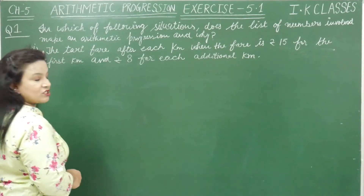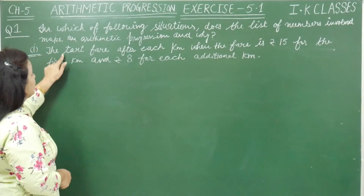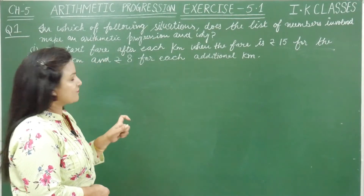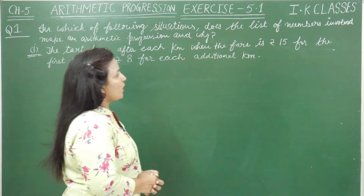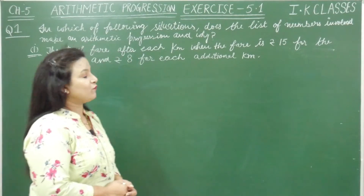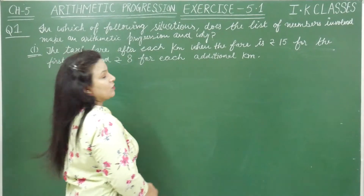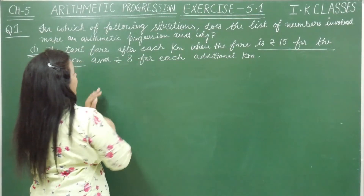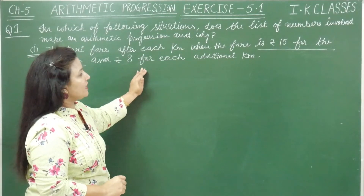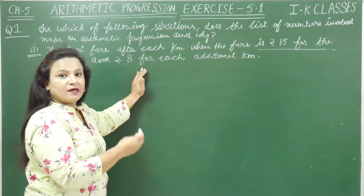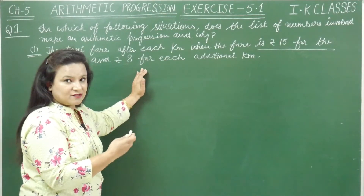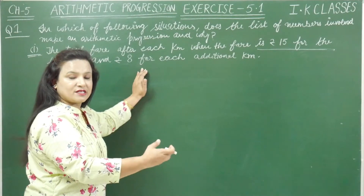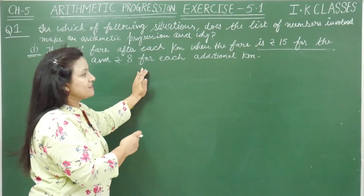The first situation is: the taxi fare after each kilometer when the fare is rupees 15 for the first kilometer and rupees 8 for each additional kilometer. So, first kilometer charges are 15 rupees and after that each kilometer charges are rupees 8.